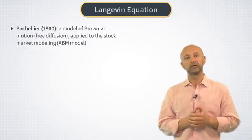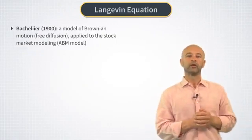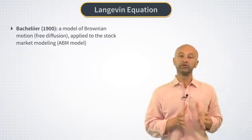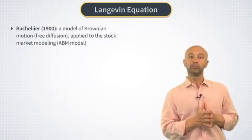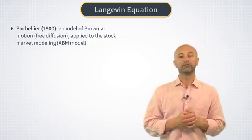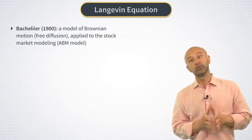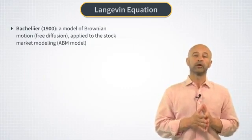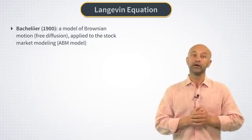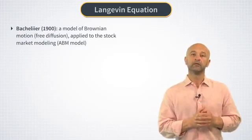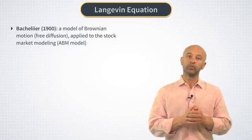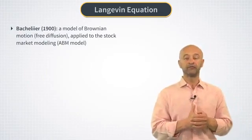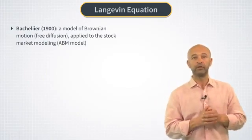First, let's start with a bit of history. The story of modern finance starts with a PhD thesis of Louis Bachelier in 1900. Bachelier was developing his own model of Brownian motion as a free diffusion a few years ahead of Einstein. He then applied it to model stock prices and came up with what is today known as the Arithmetic-Brownian Motion, or ABM model.